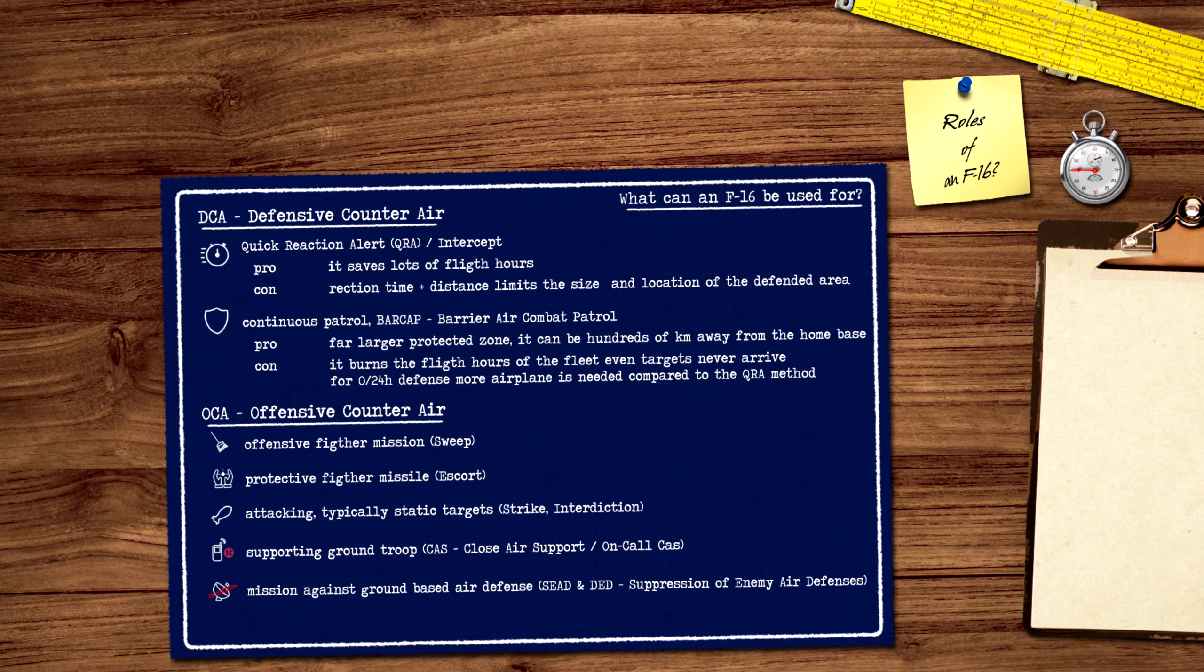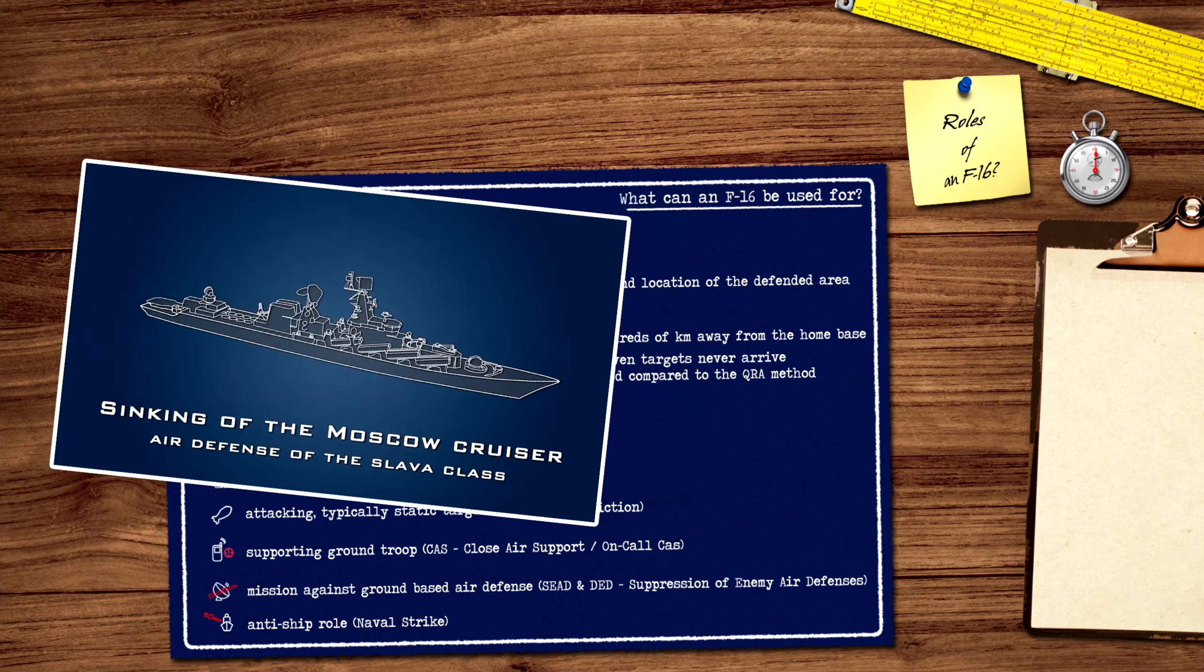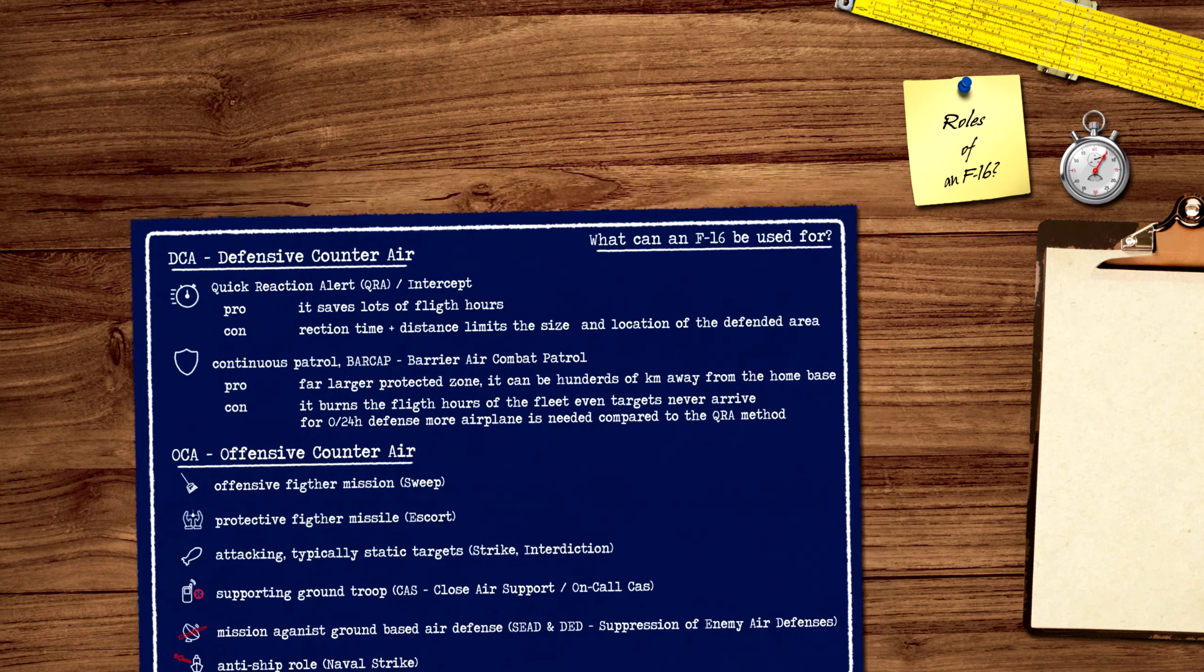The last kind of major strike role is anti-ship, which is not a typical role of an F-16, but it is possible. In fact, thanks to the losses already suffered, the Russian Navy is now only patrolling in the vicinity of the Crimean Peninsula, under the cover of land-based air defense and the naval air force.